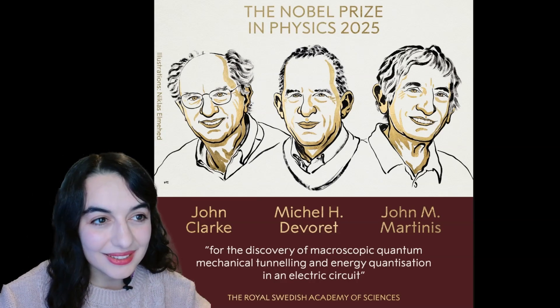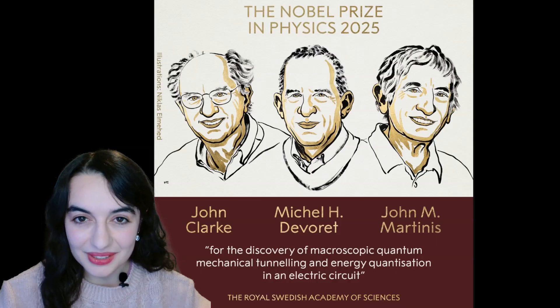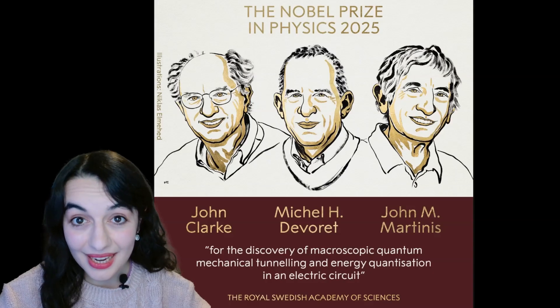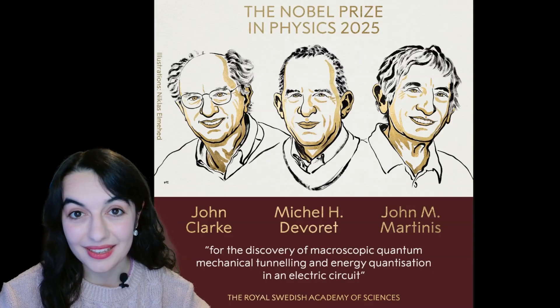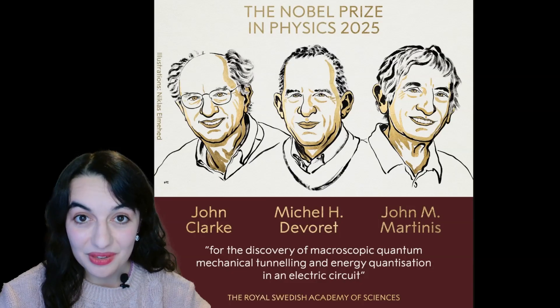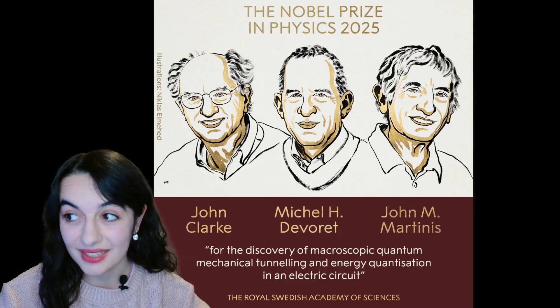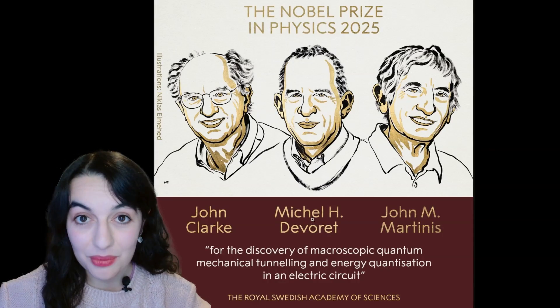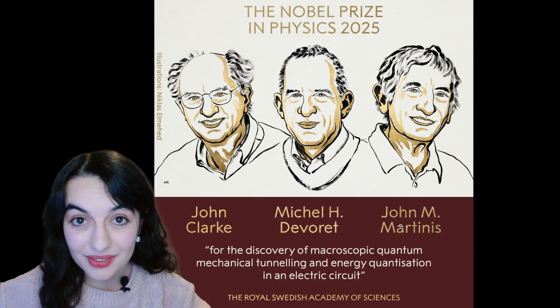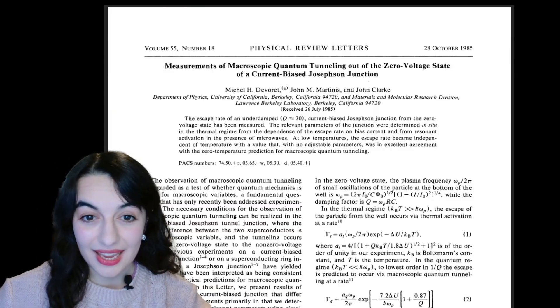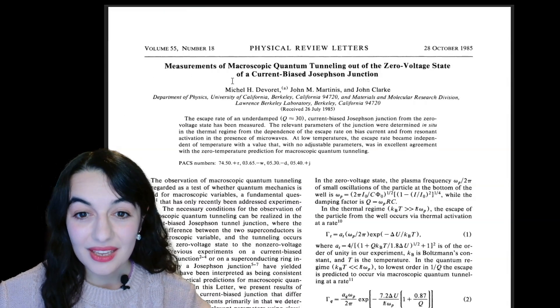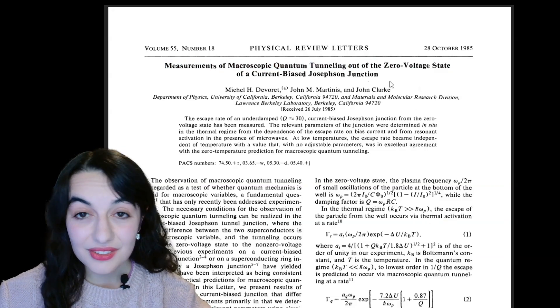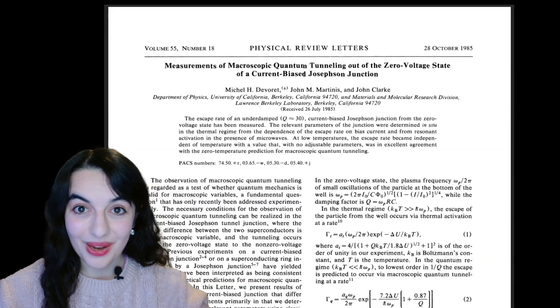I'll start by giving a little summary of what these researchers found out. The context of this Nobel Prize is that back in 1985, these three researchers, Clarke, Devoret and Martinis, all did an experiment together. John Clarke was leading the group, Devoret was a postdoc in the group, and John Martinis was a PhD student. They put out this paper together looking at measurements of macroscopic quantum tunneling in a Josephson junction. Let's break down a bit what this means.